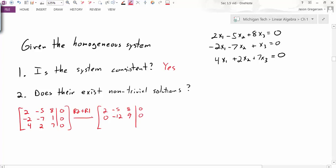I'm going to do two row operations at once. The next row operation, I'm going to take R3 and subtract 2 of R1. So that will give me 4 minus 2 times 2, which is 0. 2 minus 2 times negative 5, that will give me positive 12. And 7 minus 2 times 8, which will give me negative 9. And the last value is 0.